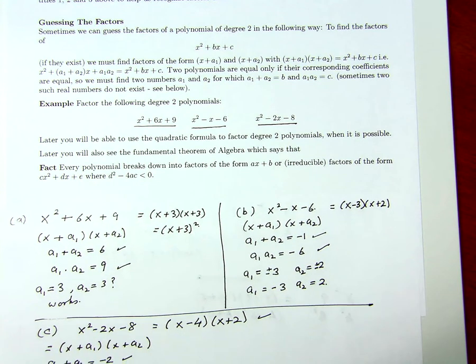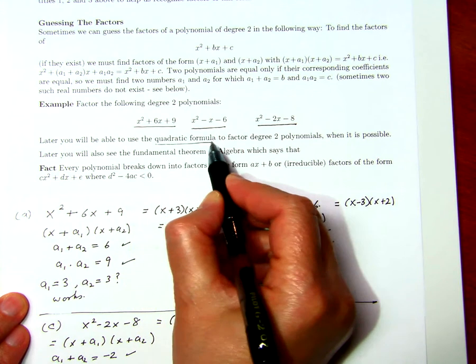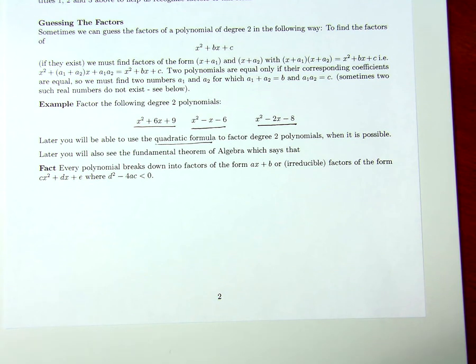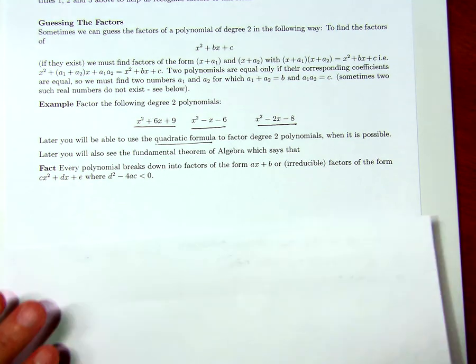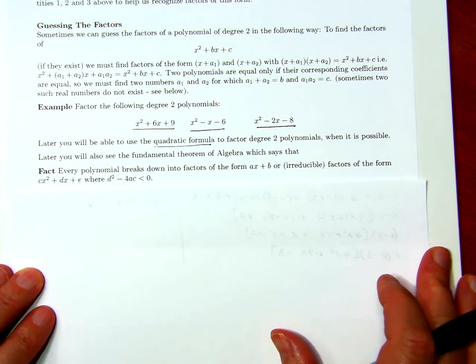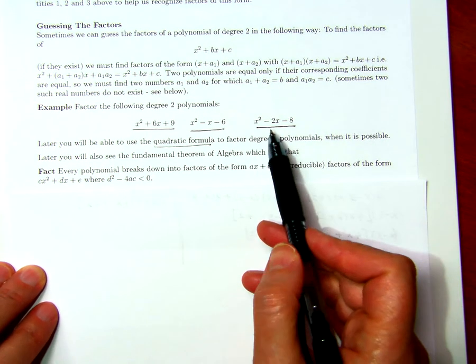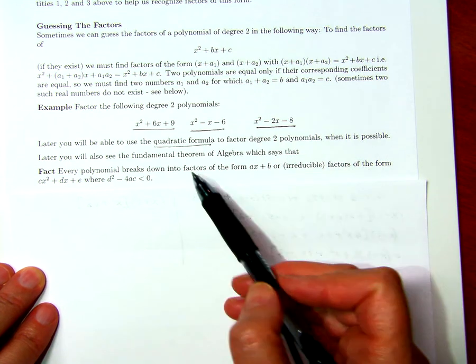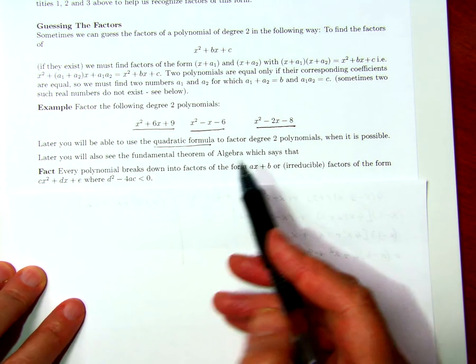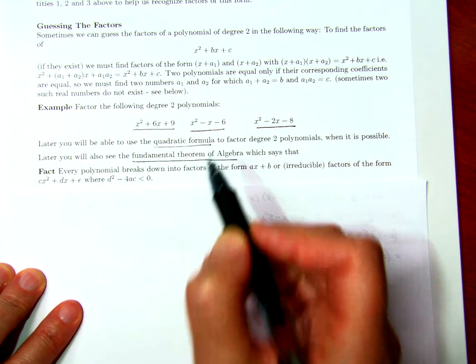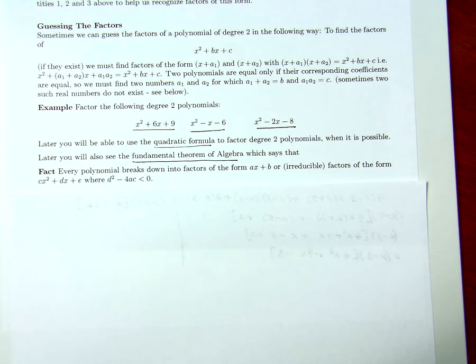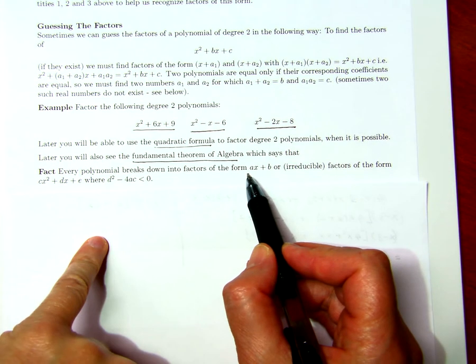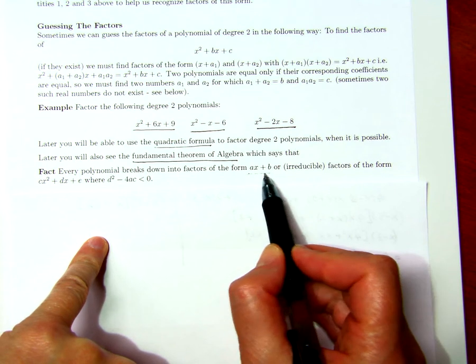Later we'll have something called the quadratic formula, which will help us find the factors of the polynomial. In fact, that just gives us a formula for what the factors are for a quadratic polynomial or a polynomial of degree 2. And also we'll have the fundamental theorem of algebra, which says that any polynomial, whatever its degree,